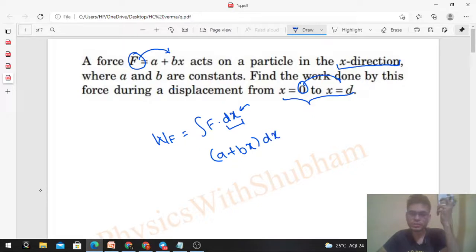Here dx cos 0 which is 1, so integrate this. You can see ax plus b x squared. Where to integrate? From 0 to d. So integrating from 0 to d, the answer will be ad + bd²/2.